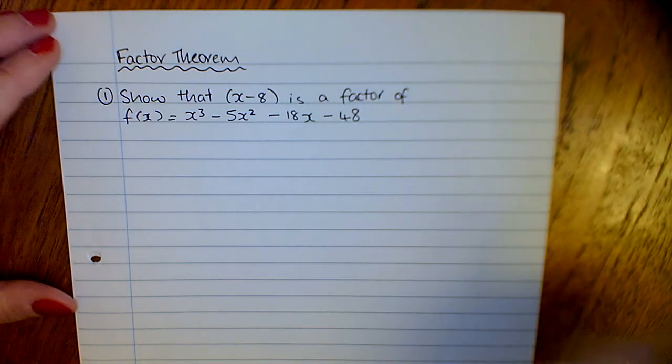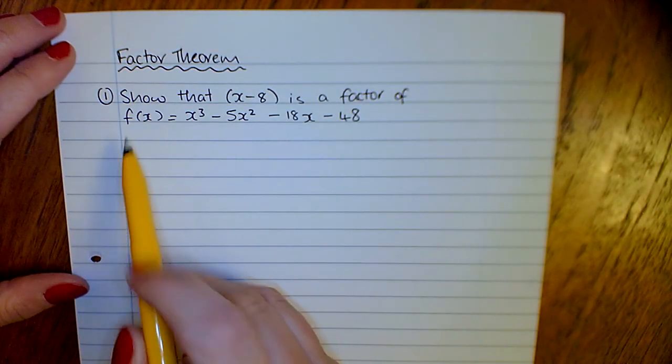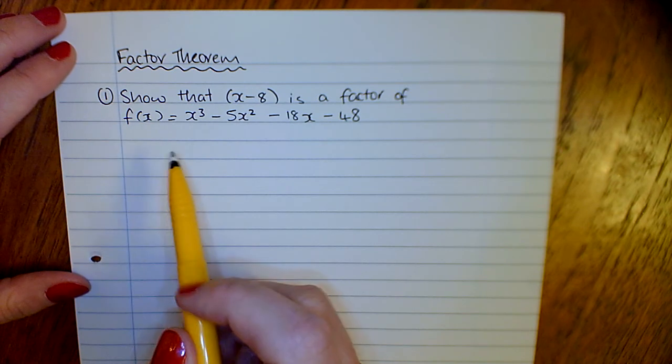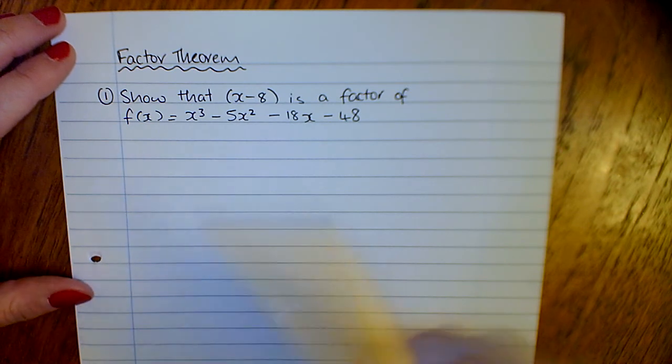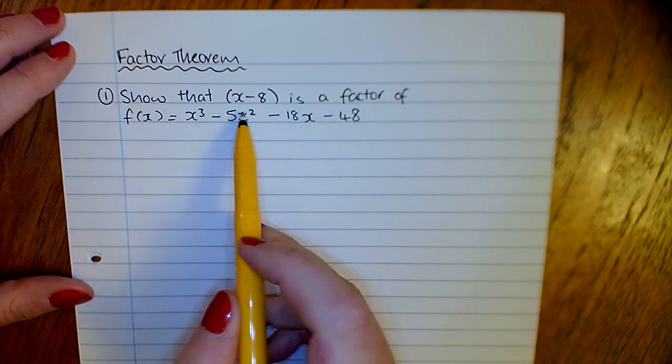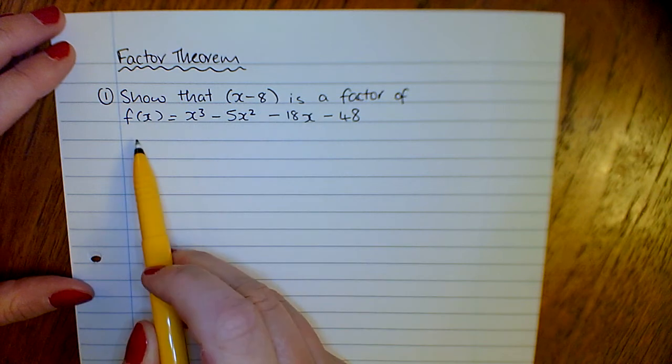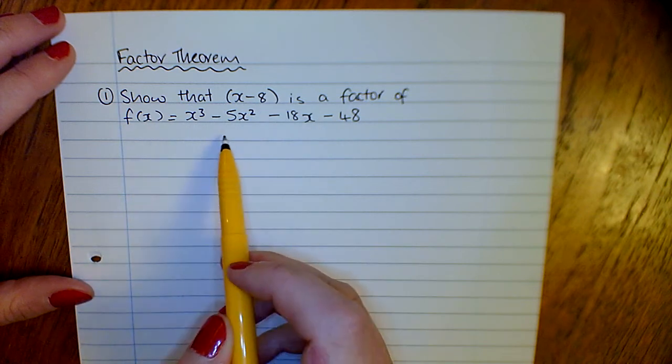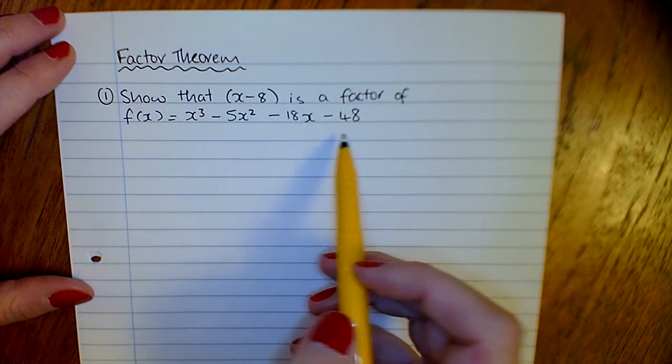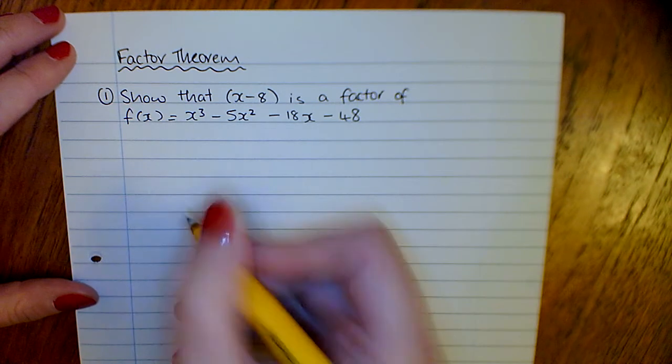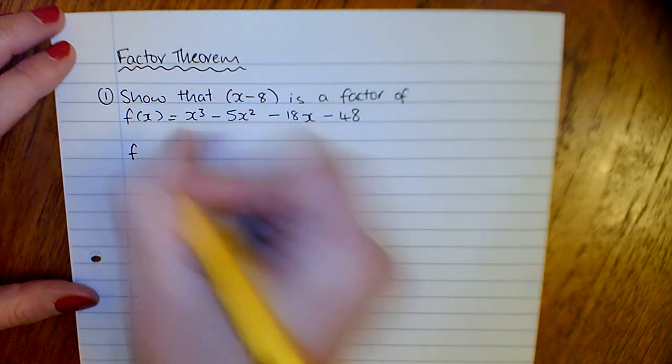Okay, so a special case of the Remainder Theorem is the Factor Theorem. This is where we did our long division and found something was a factor with no remainder. Show that x minus 8 is a factor of this function: x cubed minus 5x squared minus 18x minus 48.